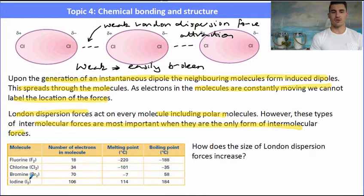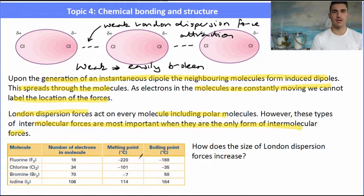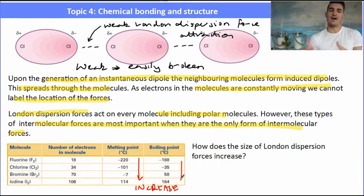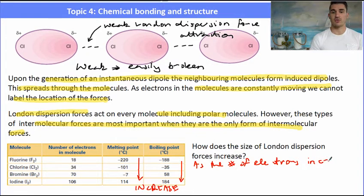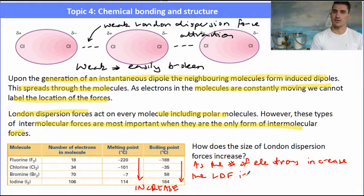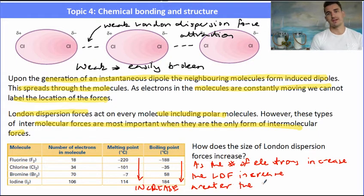Looking at non-polar molecules, we have the halogens. As we go down Group 17, the melting point and boiling point of those halogens starts to increase. They all only have London dispersion forces, so how can those melting and boiling points change? Two reasons: first, as we go down the group, the molecules have more electrons — the greater the amount of electrons, the greater the induction of those dipoles. Second, as the molar mass of a molecule gets bigger, so do the London dispersion forces — the bigger the molar mass, the stronger those London dispersion forces.